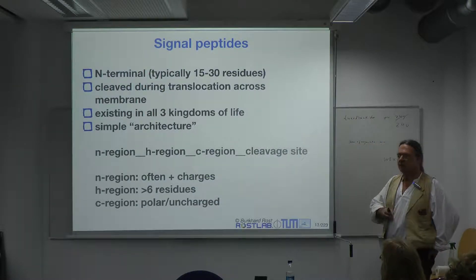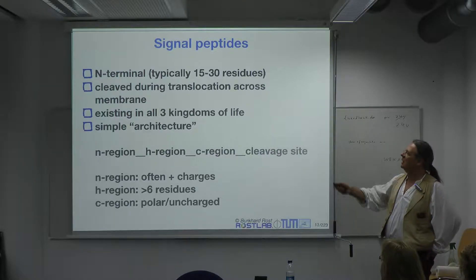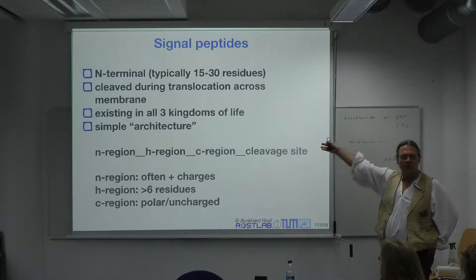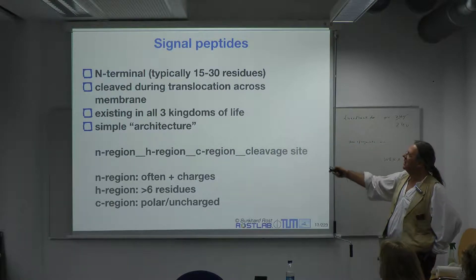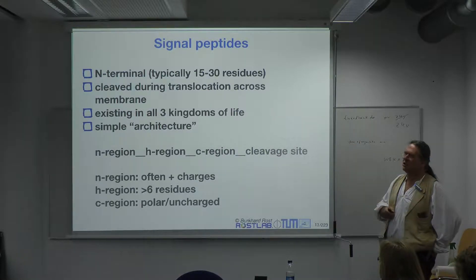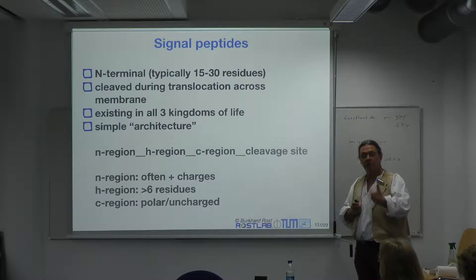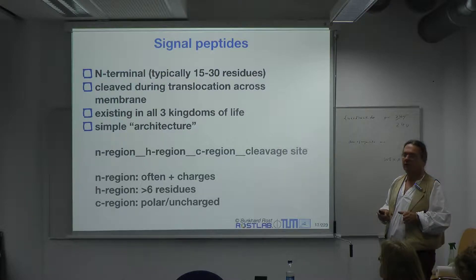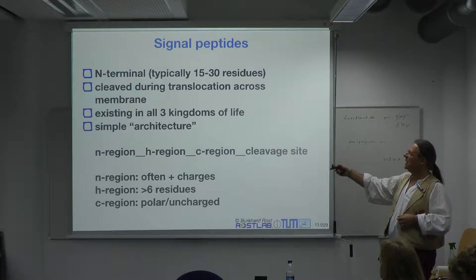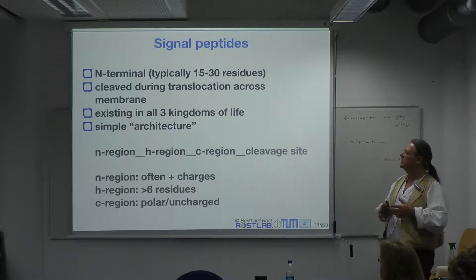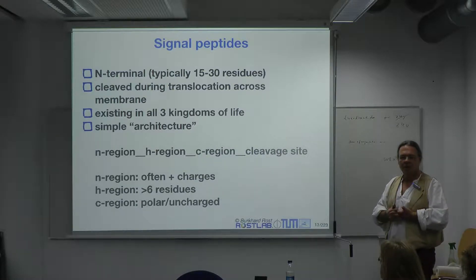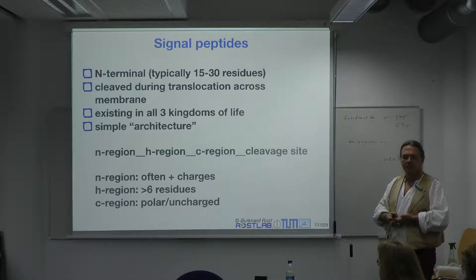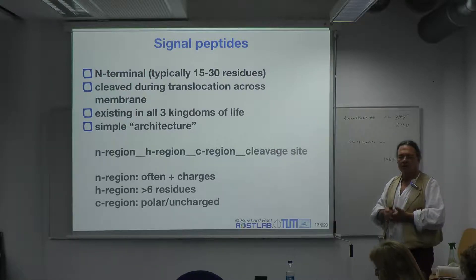The way SignalP was developed: Nielsen began by collecting data and looking at simple features. Signal peptides are essentially N-terminal, at the beginning of the protein. They are typically between 15 and 30 residues long. They are cleaved during translocation across the membrane. Do you understand what that means?